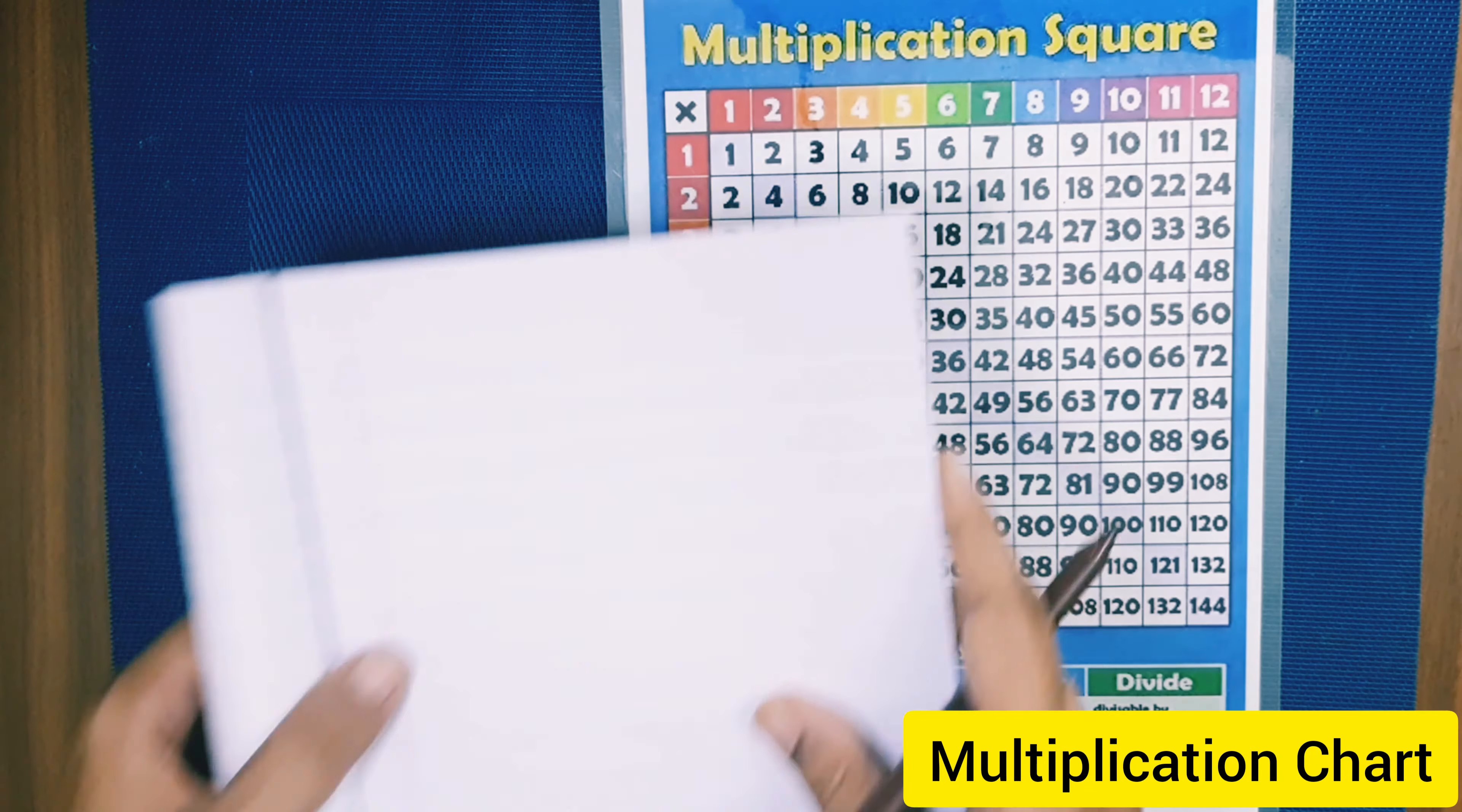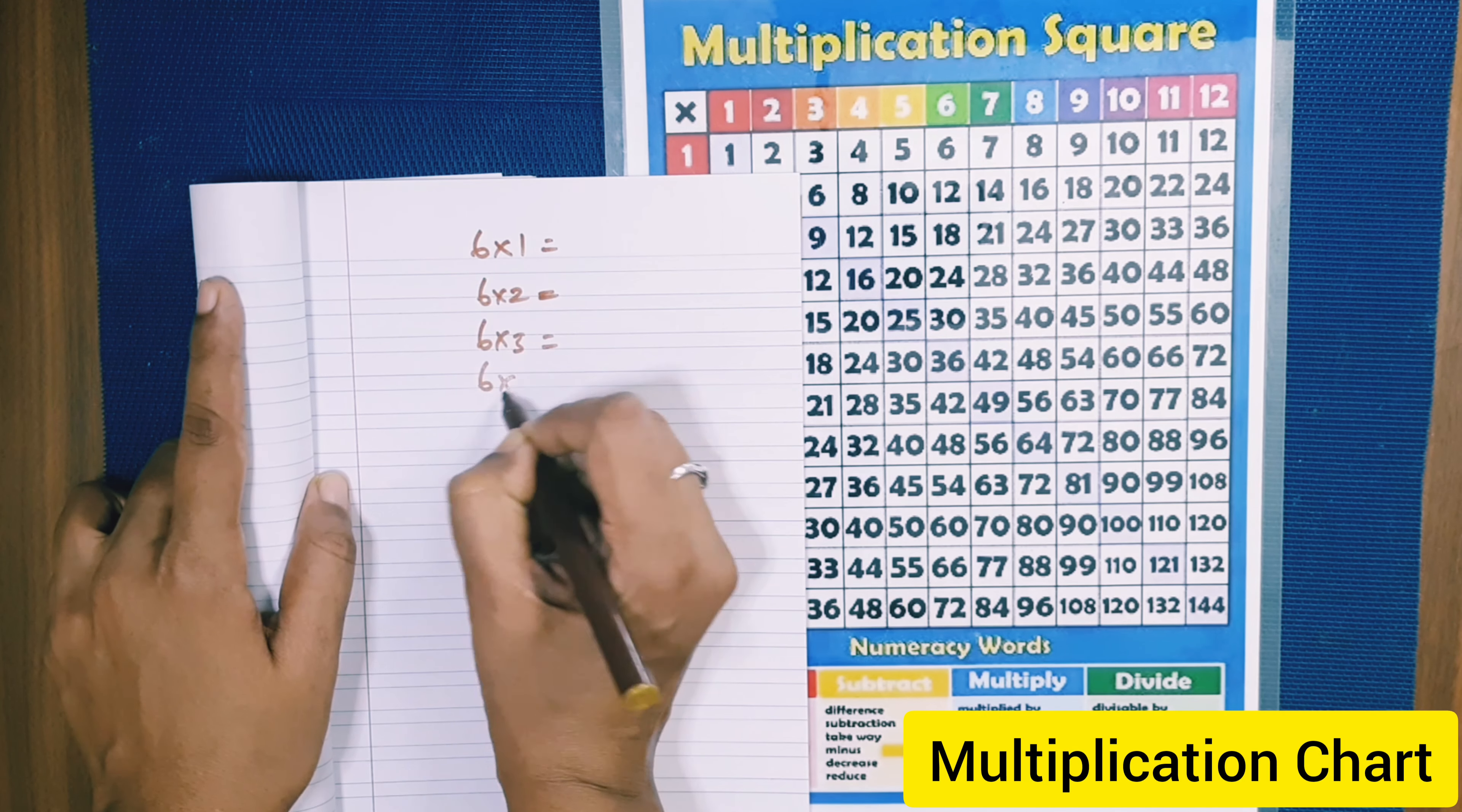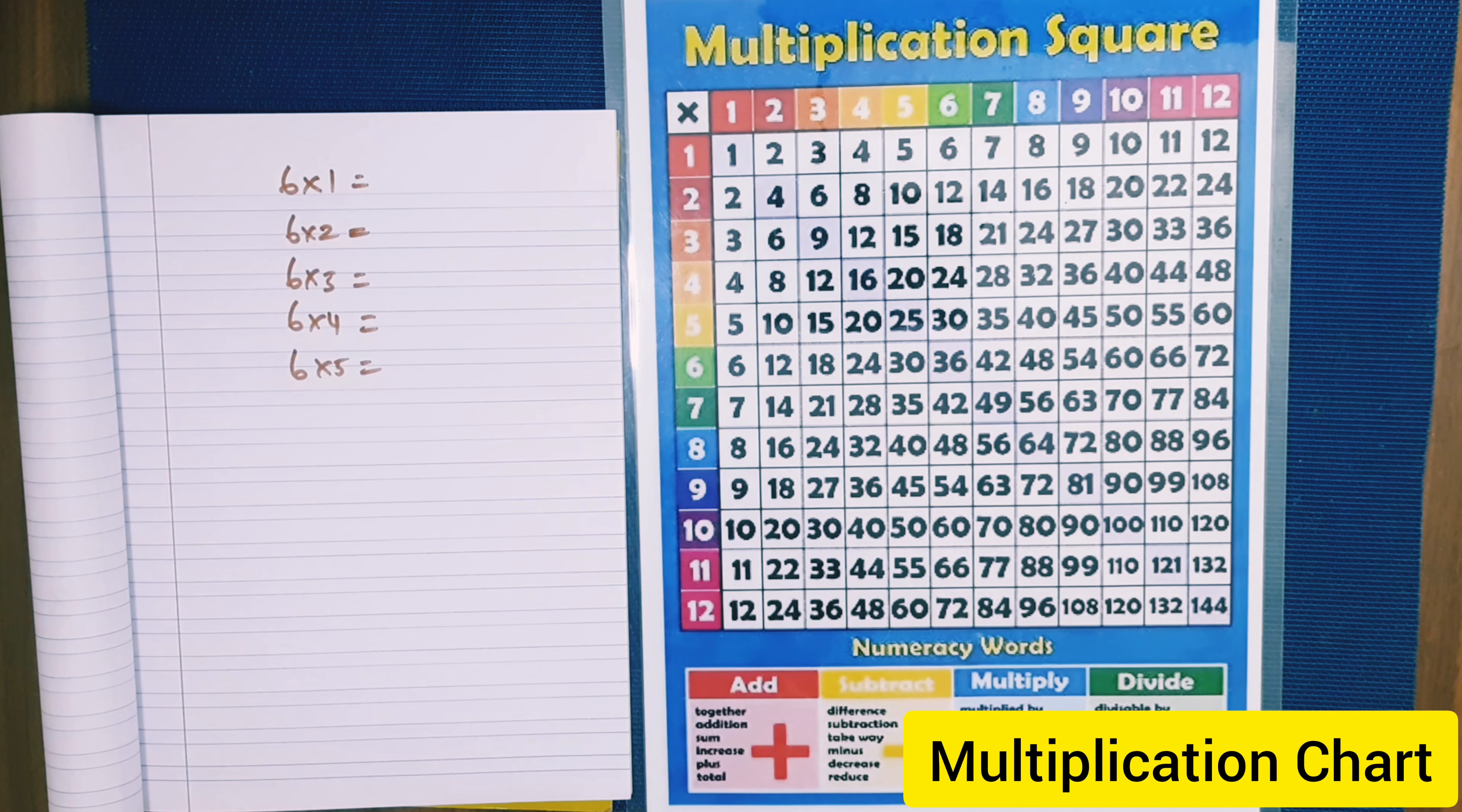So before going to this one, you can write like 6 taken 1 equals 6, like that you can give prepared problems to the child. So that the child can write because whenever they are verbalizing and writing, it will register in their mind properly.